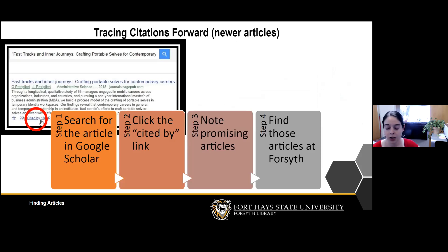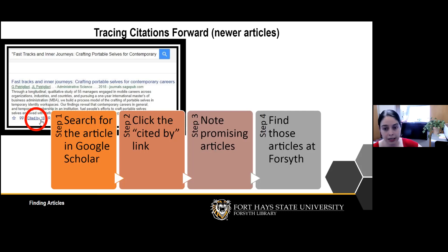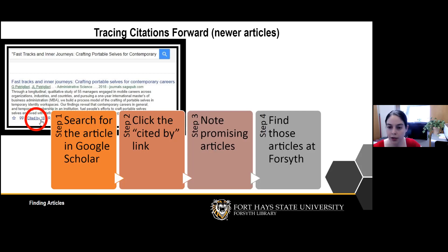We can also trace citations forward, which is particularly useful if you find a great, highly relevant article that is a bit older. In many disciplines, things change quickly and instructors may require articles from the last five or ten years. Tracing forward lets you find newer articles that cited the older one, so you can see how other authors have responded and what has changed in the literature.